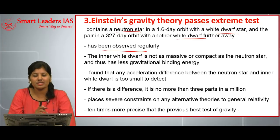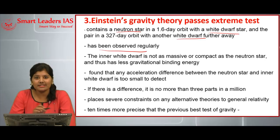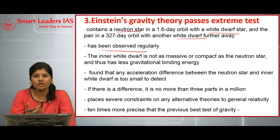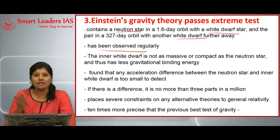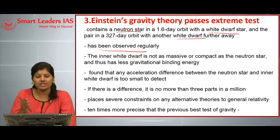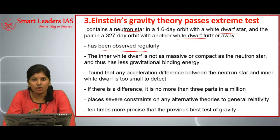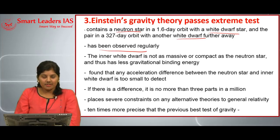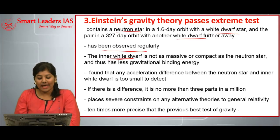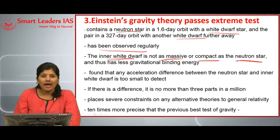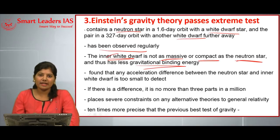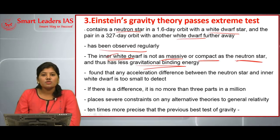If the helium or hydrogen gases are exhausted, expansion stops and only contraction takes place, leading to the formation of neutron stars, which are very small compared to normal stars. For example, the Sun has a radius of about 700,000 kilometers, but a typical neutron star has a radius of only about 30 kilometers. In this triple star system, the inner white dwarf is not as massive or compact as the neutron star and thus has very little gravitational binding energy compared to the neutron star.